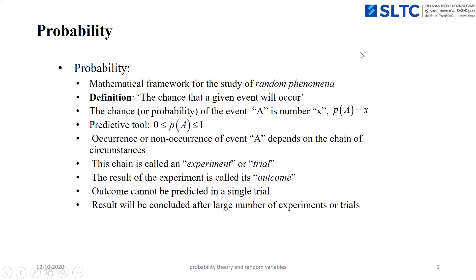By definition, probability means the chance that a given event will occur. The given event may be a chance of the occurrence of rain or chance of the occurrence of an accident, and so on. The chance of event A is measured by a number X — mathematically, P(A) = X — meaning the probability of occurrence of event A equals some number; it may be 0.5, 1, or 0.